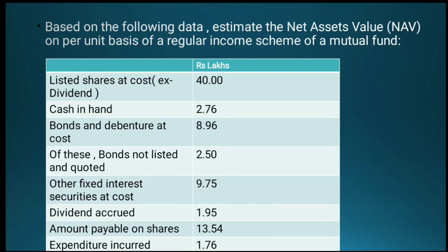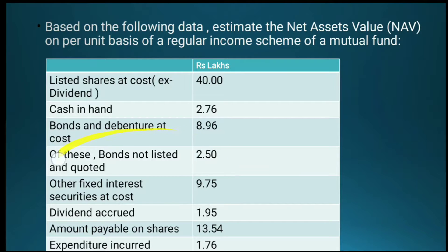Bonds and debentures at cost are also given. Unlisted bonds: 2.5 lakhs. Listed bonds and debentures: their value is given. Other fixed interest securities at cost: 9.75 lakhs. We have to calculate their market value.